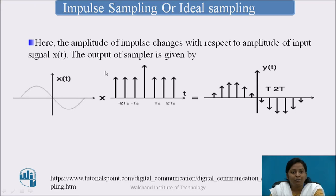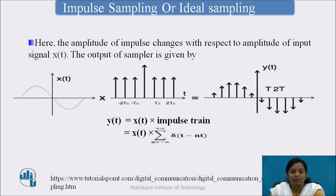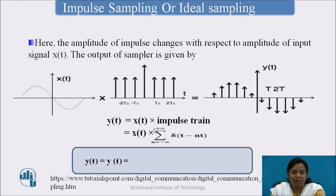In impulse sampling or ideal sampling, the amplitude of the impulses changes with respect to the amplitude of the input signal x(t). So y(t) = x(t) multiplied by the impulse train, which can be represented as the summation from n = −∞ to +∞ of δ(t − nTs), where n is the number of the sample. Therefore y(t) = summation from n = −∞ to +∞ of x(nTs) · δ(t − nTs).